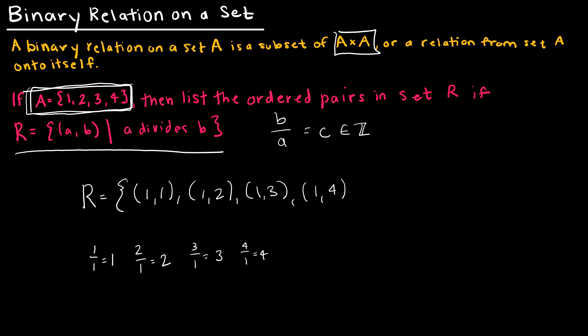Now let's take a look at 2. Could I take 1 divided by 2? No, that's not an integer. Could I take 2 divided by 2? Yes, that's an integer. So now I have 2 comma 2. And could I take 3 divided by 2? Nope, that's not an integer. Could I take 4 divided by 2? Yes, I could. So 2 comma 4.